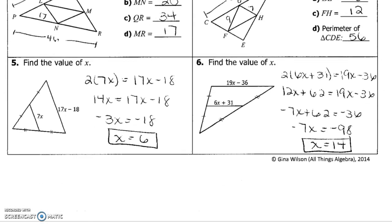So here are the answers to five and six. All they wanted to do was find x. So we can say two of the mid-segments is equal to the base. So two times 7x is 14x equal to 17x minus 18. Same thing on number six. Two of the mid-segments equals the base.